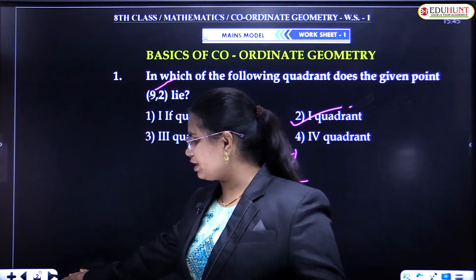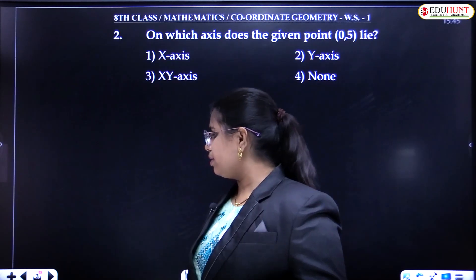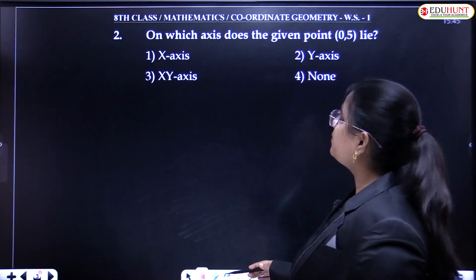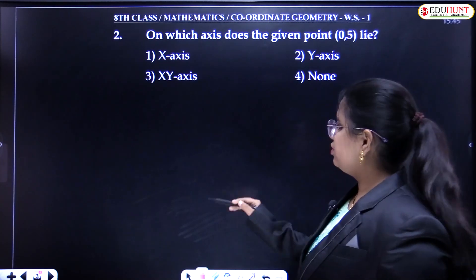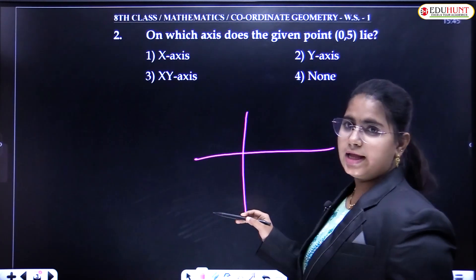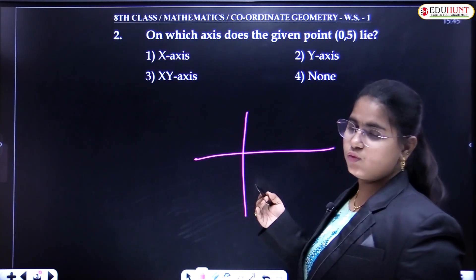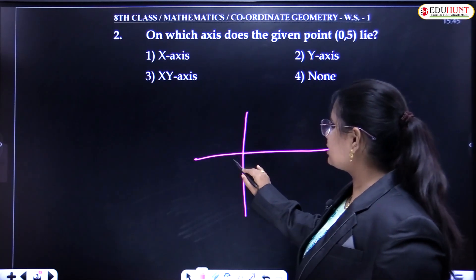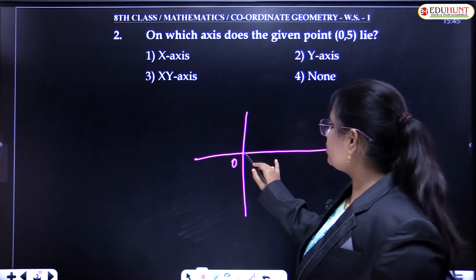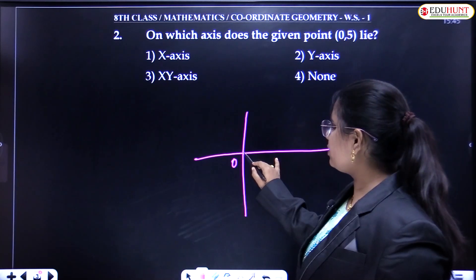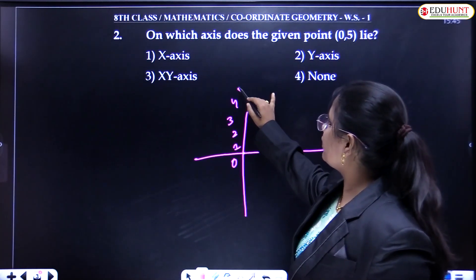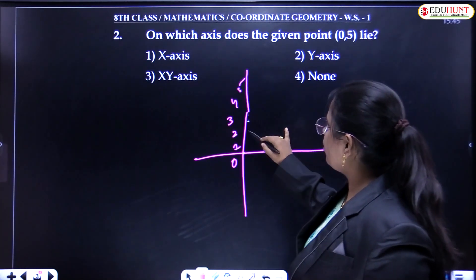Moving to the next question: on which axis does the given point (0, 5) lie? For (0, 5), the X coordinate is 0 and the Y coordinate is 5. The intersection point is (0, 0). Plotting the point, we count 1, 2, 3, 4, 5 on the Y axis.